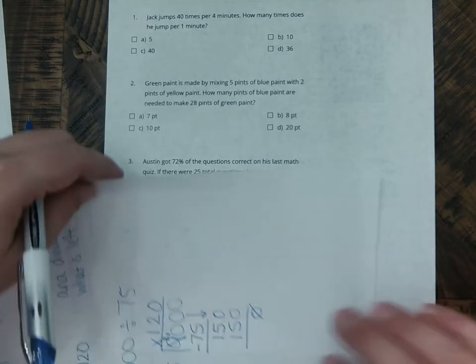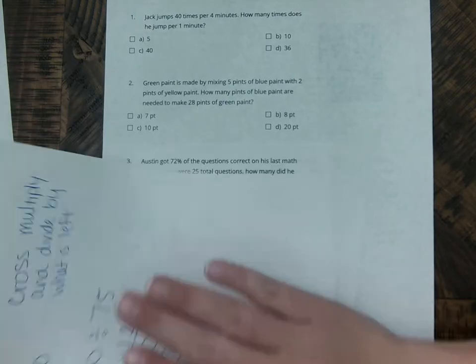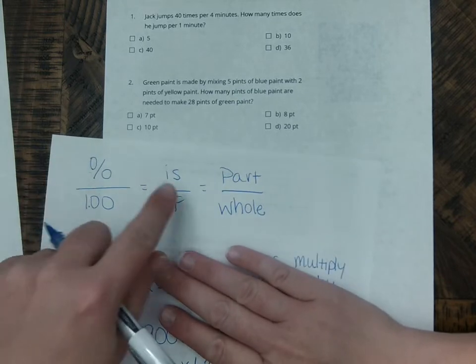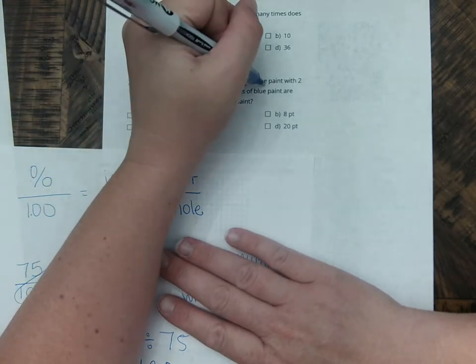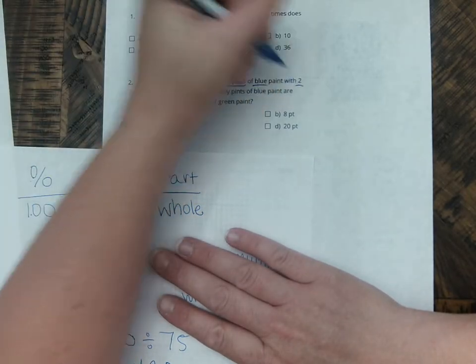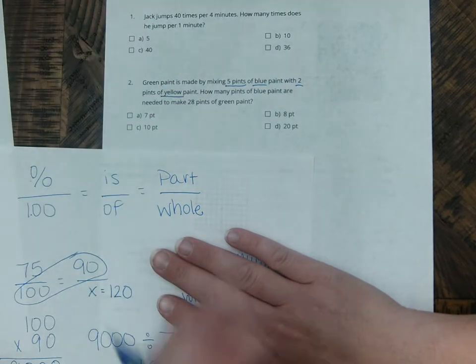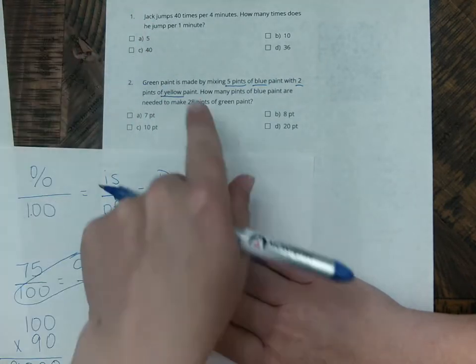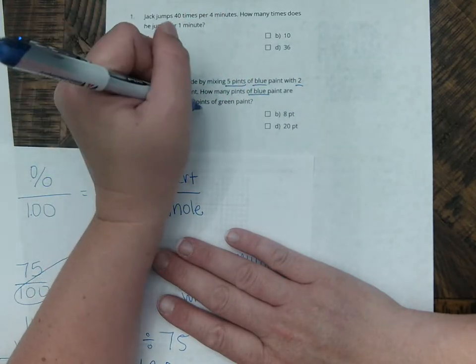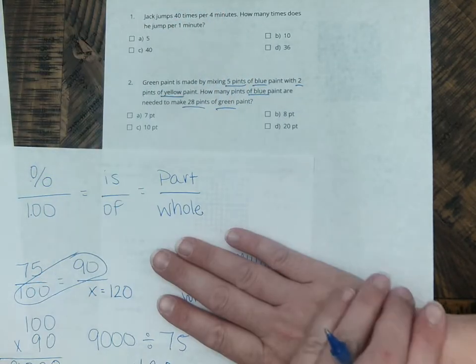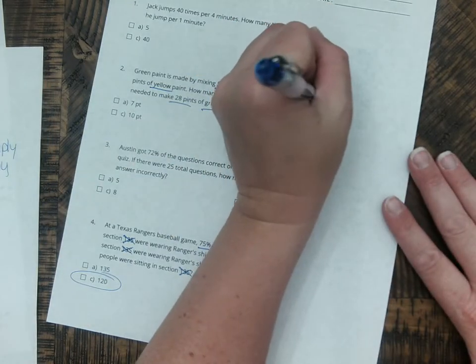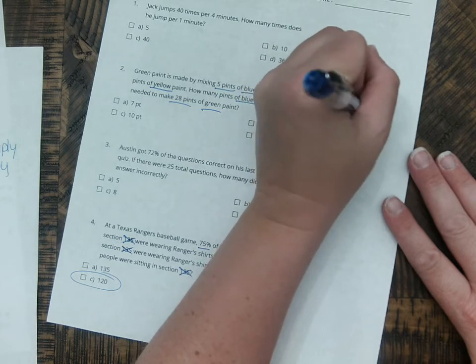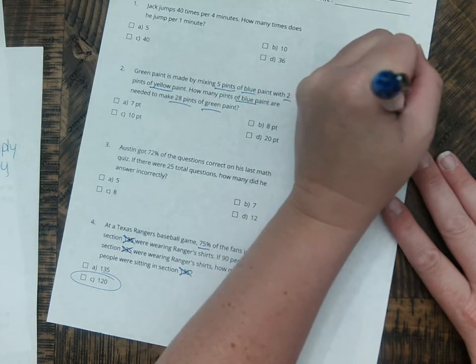Let's look at number 2, though. Number 2 is a little bit different. So we're still going to do the percent strategy, mainly with the proportions. It says 5 pints of blue with 2 pints of yellow. That's how we make green paint. How many pints of blue paint are needed to make 28 pints of green paint?